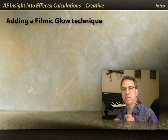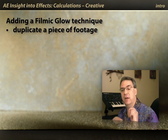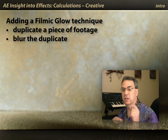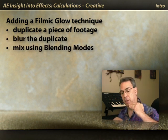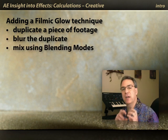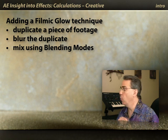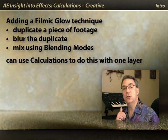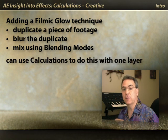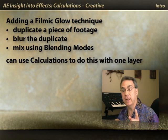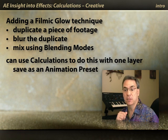We have a separate course demonstrating what we call the filmic glow technique. In short, you take a piece of footage, duplicate it, blur it, set a blending mode for it, mix on top of the copy underneath, and then you get a much enhanced version of the original footage. You can use the calculations effect to do that with one layer, and when it's one layer, it means you can save an animation preset of it.